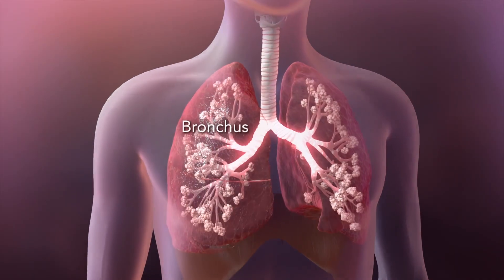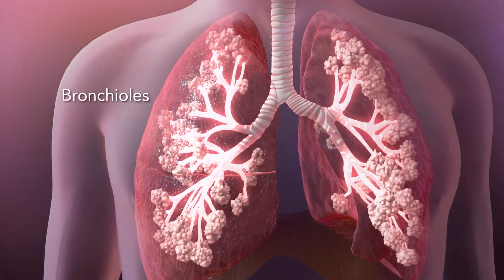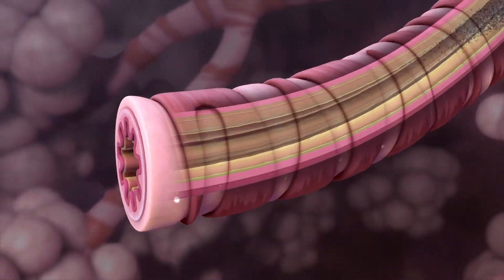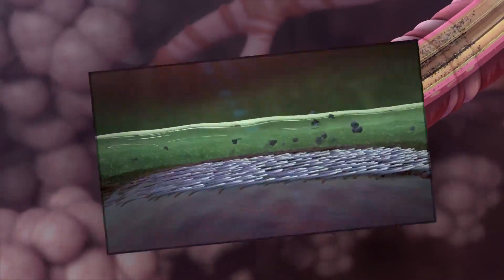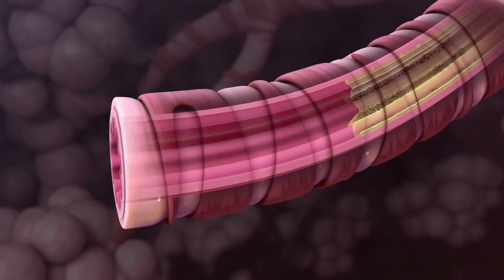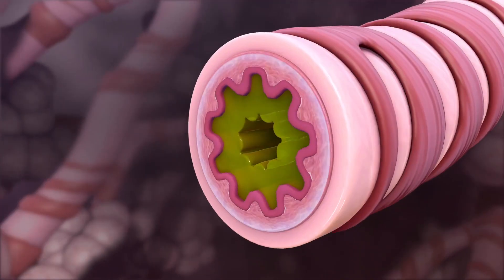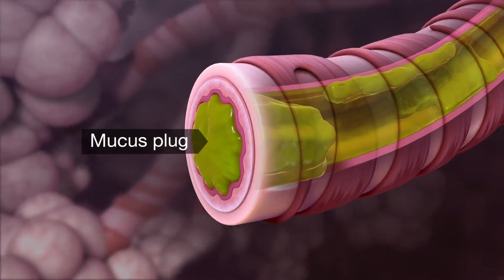Another example of a single gene disorder is cystic fibrosis. It is caused by a mutation in the CFTR gene found in chromosome 7. Cystic fibrosis is characterized by the build-up of thick, sticky mucus that can damage many of the body's organs. The disorder's most common signs and symptoms include progressive damage to the respiratory system and chronic digestive system problems.